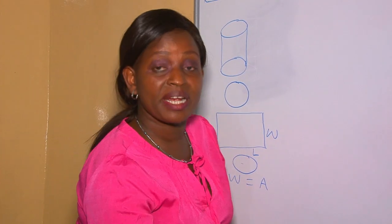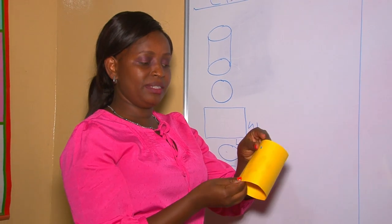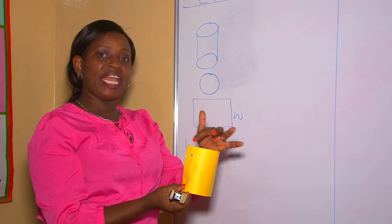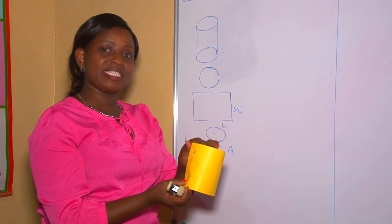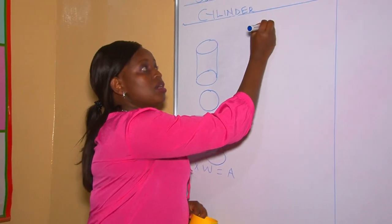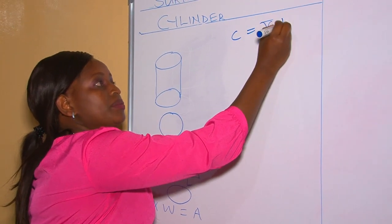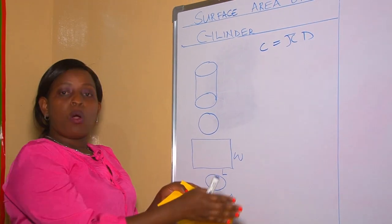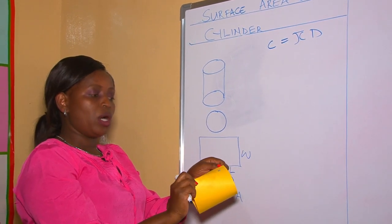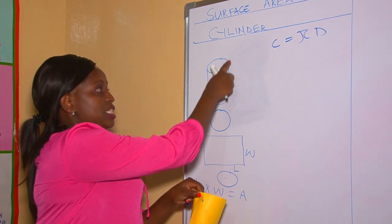Now let's make up a cylinder practically. The rectangle, once we fold it, our length becomes circular. So going around any circular shape, that is circumference. And how do we get the circumference of a circle? Circumference of a circle equals pi d. Then our width, once we fold it to acquire that shape, it becomes the height of this cylinder.